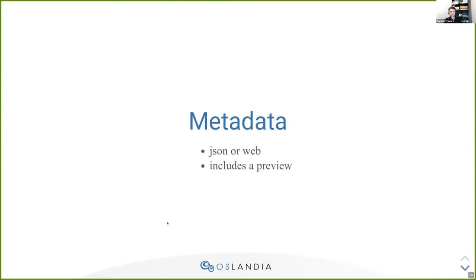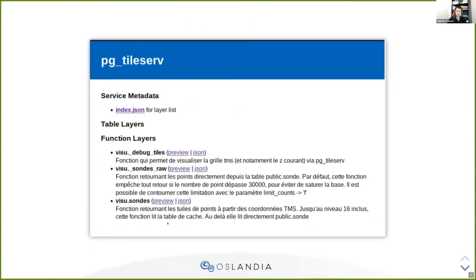Both projects include metadata, both in human-readable format and JSON format. And we have a preview for the data, which is really nice. For example, this is the homepage of PGTileServe — if you start it and go to the home, you have links to JSON metadata for the whole service that you can consume in your application. And you have the list of layers in your database. Here I have some function layers, so I can preview the function and have a description in JSON.